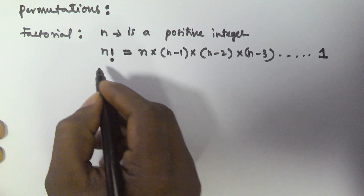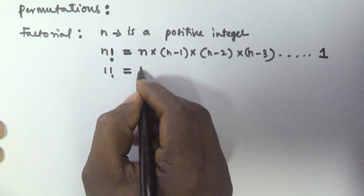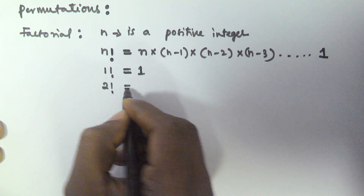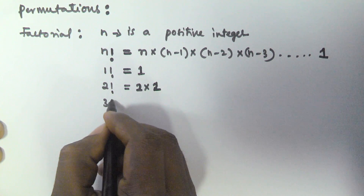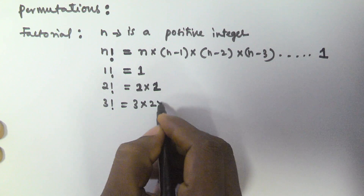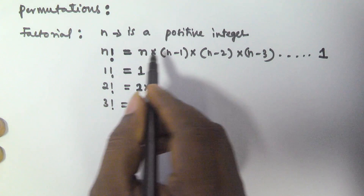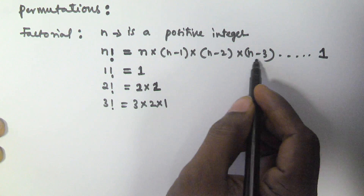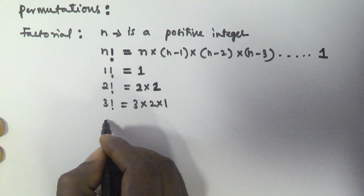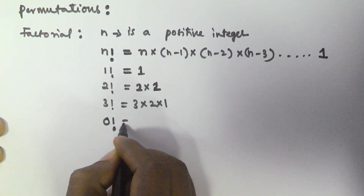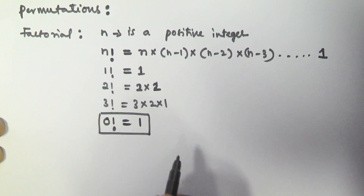For example, 1 factorial is 1. And 2 factorial is 2 into 1, which is 2. And 3 factorial is 3 into 2 into 1. In general, n factorial equals n into n minus 1 into n minus 2 into n minus 3 until 1. The mathematicians define 0 factorial as equal to 1.